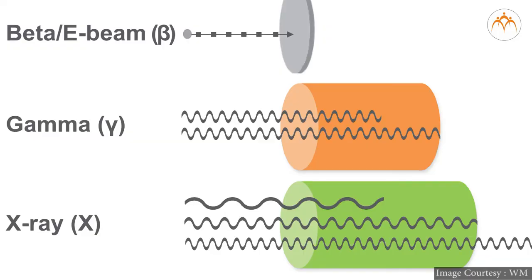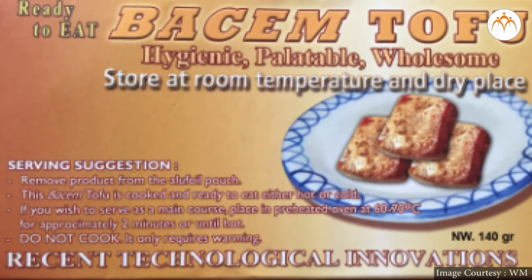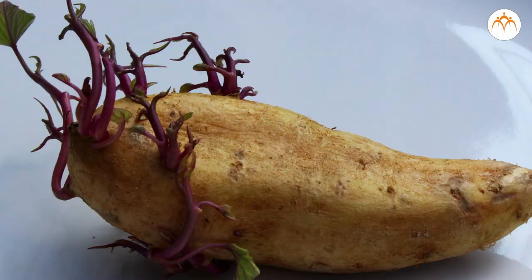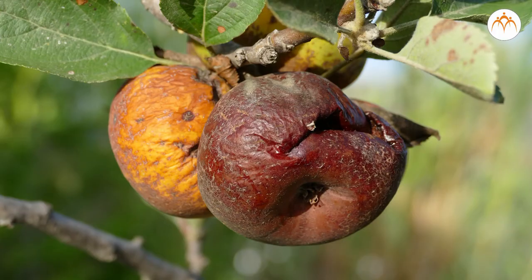Food irradiation is one of the new techniques in which food items are exposed to X-rays, gamma rays, or electron beams. This treatment extends shelf life or post-harvest life of food materials. Sprouting of onions, garlic, potato, quick ripening of fruits, and spoilage of vegetables can be prevented by this method.